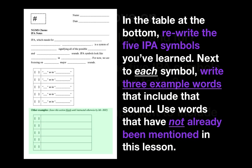So don't use any of the words that were presented as examples in this lesson. Come up with your own example words that include that sound. So three example words for each IPA symbol, which means a total of 15 words, three in each box.